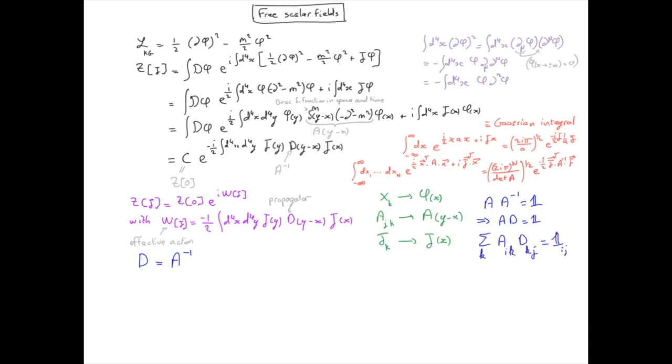But the matrix elements of the identity matrix are 1 if i is equal to j and 0 otherwise. So that's just a Kronecker delta.